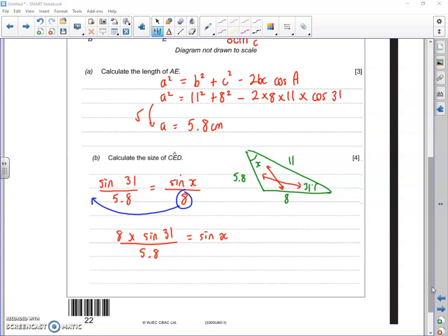We want X on its own, so you'll have to do sine minus 1 afterwards as well. So we'll probably write down that X equals the sine minus 1 of all of that stuff. 8 times sine 31 over 5.8. The final answer you should get to the angle is 44.8 degrees.